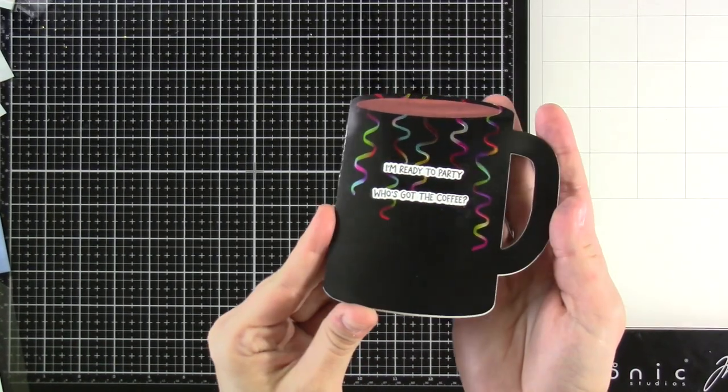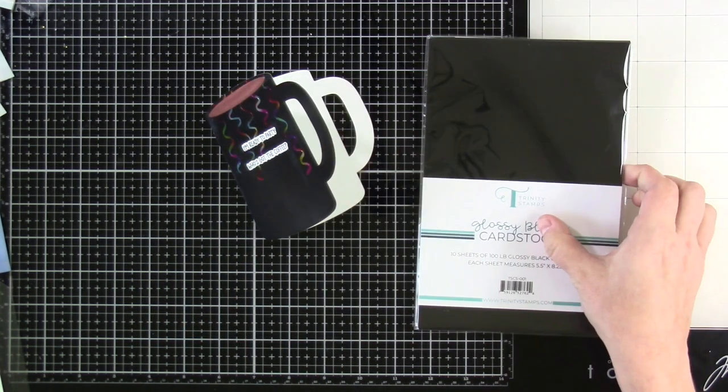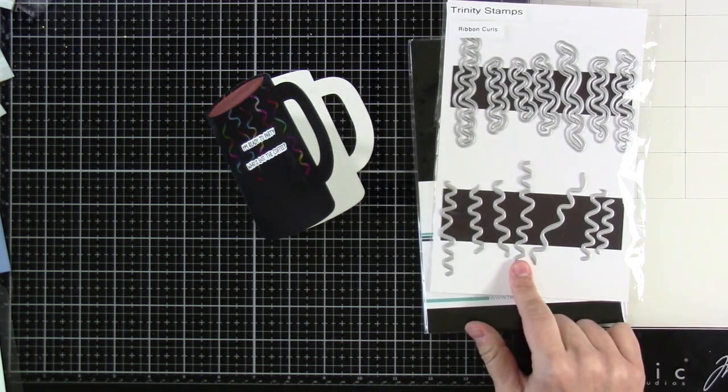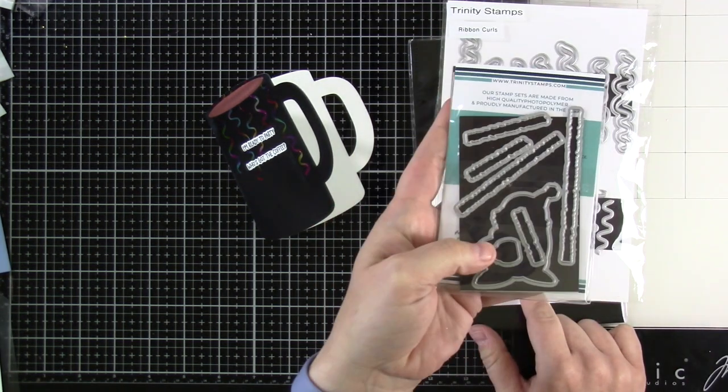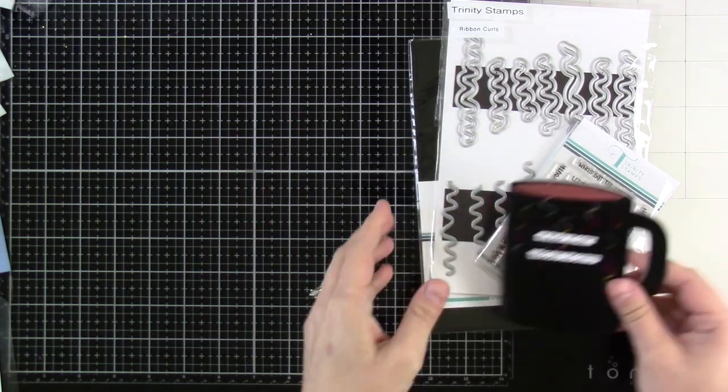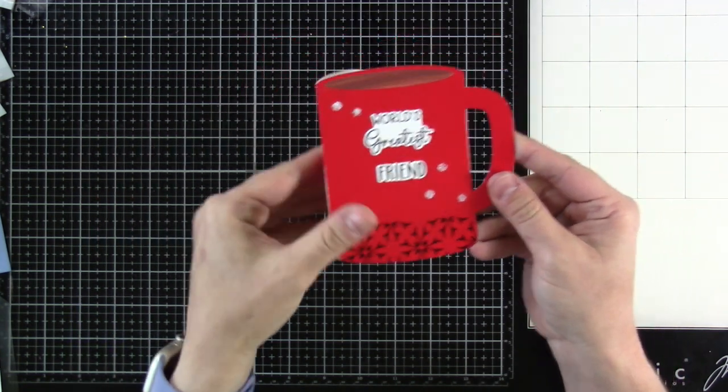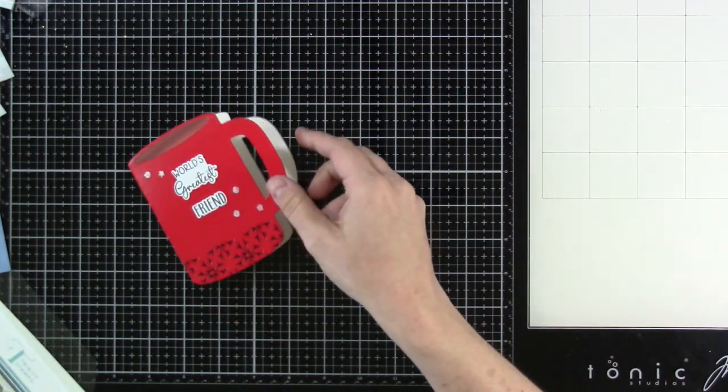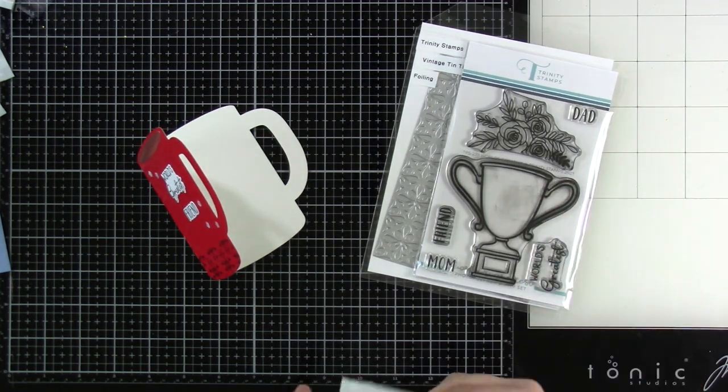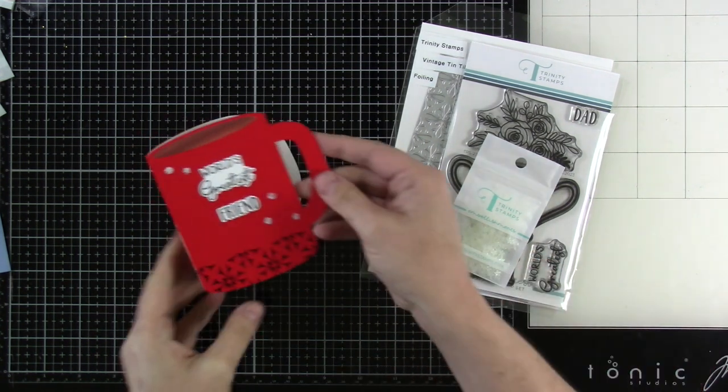So there's the two that we made on camera. And now let me share with you this one that I made using some glossy black cardstock. That one also uses the Ribbon Curls brand new die and foil plate. And then we use the Fantusktik stamps and dies for the sentiment. It says, I'm ready to party. Who's got the coffee? And then I used the rainbow confetti on that one. This particular one uses the red foiling cardstock. I used some black foil. We used our vintage tin tile foil plate, and then the older World's Greatest stamp set, along with some sparkle stars. I think that one turned out so fun. You could do World's Greatest Friend, Mom, Dad, whatever.